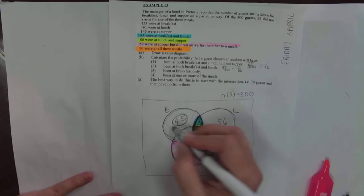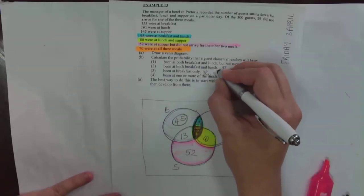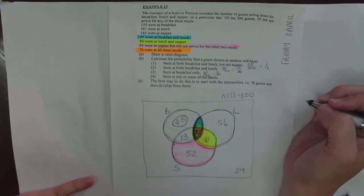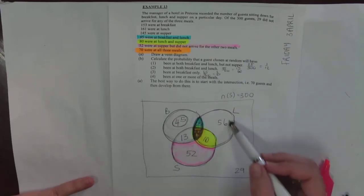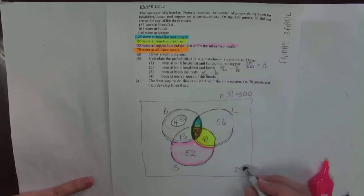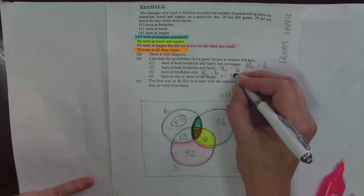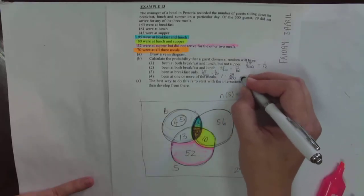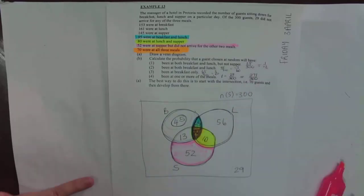Breakfast only is 45 over 300, that's 3 over 20. Being at one or more of the meals—so how many of them are there? You can either add all those numbers, or you can say 29 people did not have any meals, so how many people did have meals? So 1 minus 29 over 300. That means 271 did.